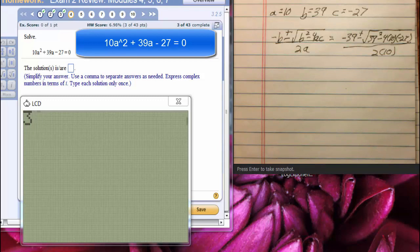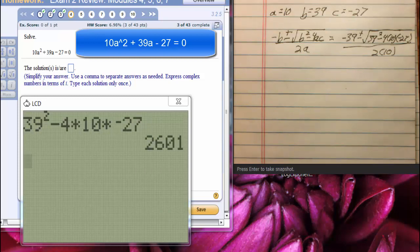I'm going to say 39 squared minus 4 times 10 times negative 27, and I'm going to say enter. It's 2601.